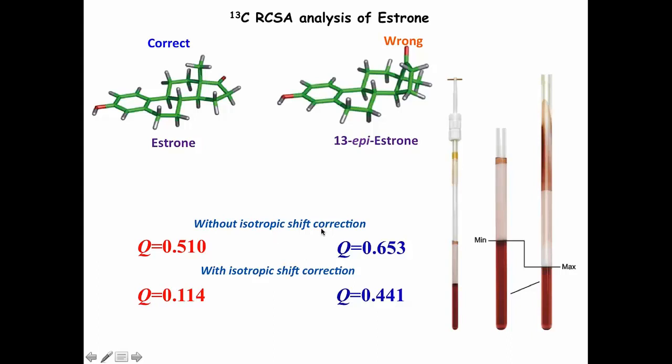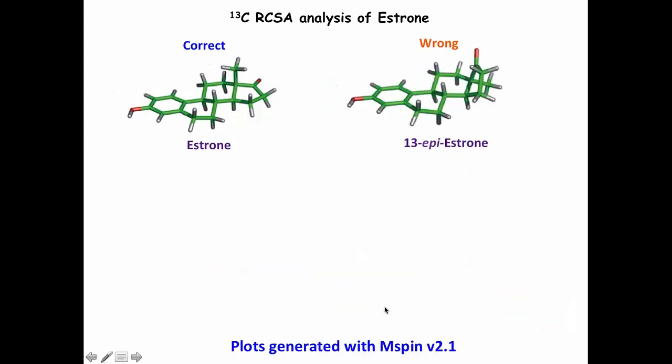So you can tell. 0.5, 0.1. And now it was possible to do it. So here we are all happy. Correct structure. Wrong structure. Done with the compression device. As I'm telling you that if you do it with stretching, you don't need to perform this correction. But you can see the changes. Without the isotropic correction, it's 0.5 and 0.6. With the isotropic correction, it's 0.1 and 0.4.